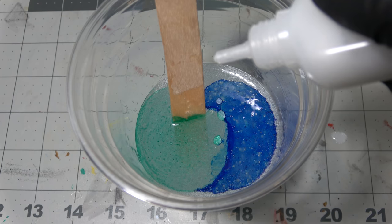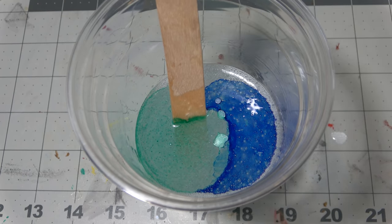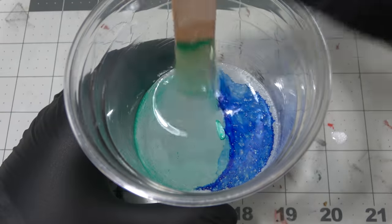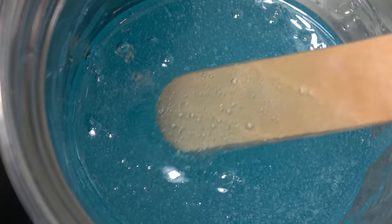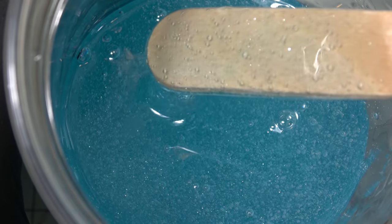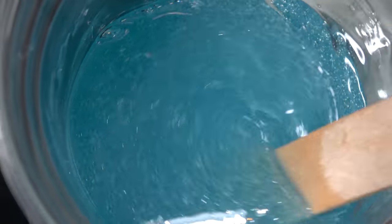The ratio that I use is one of the dark blue, three of the kind of greenish blue, and five of my liquid glitter. That gets me a really, really nice looking blue, and probably my wife's favorite color, and so that's what I'm going to go with for the entirety of this build.